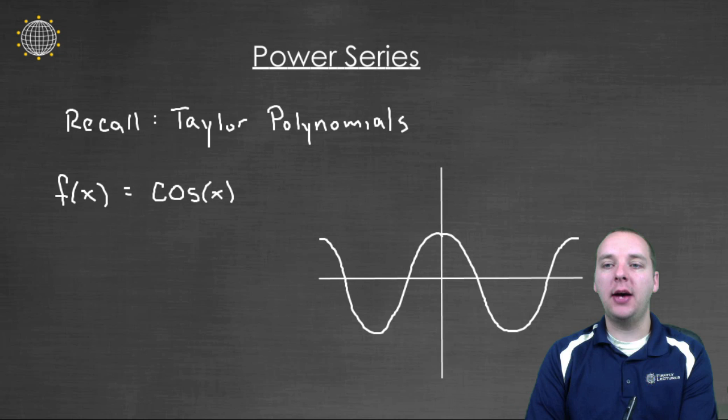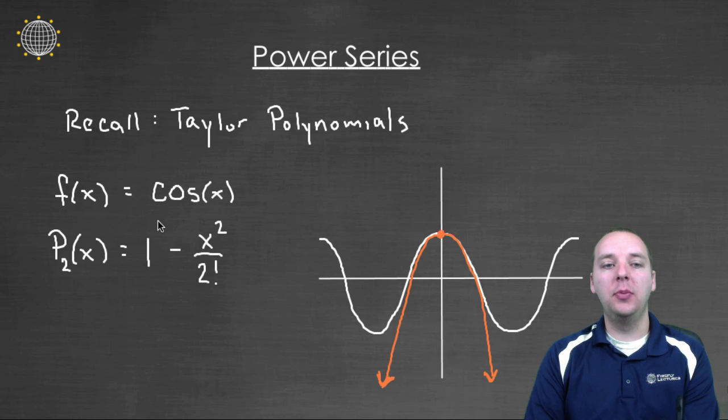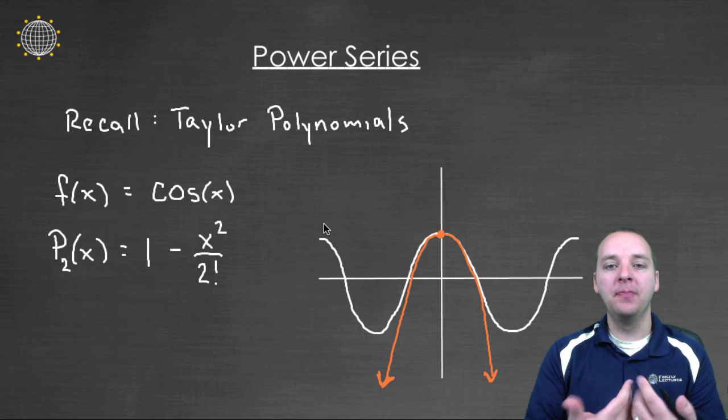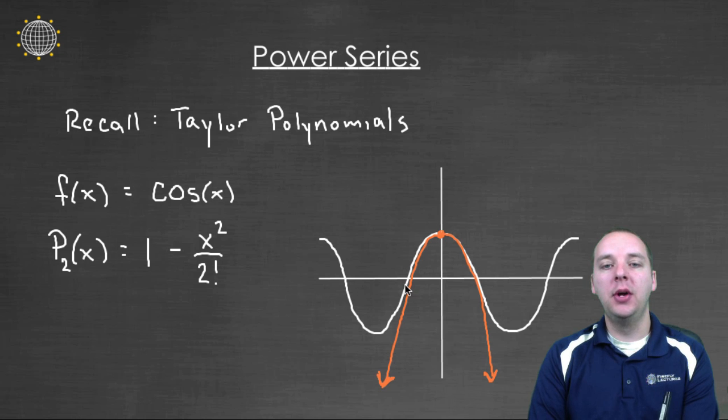So if you have a cosine graph, if you find a Taylor polynomial of degree 2, let's say a quadratic, it will approximate it well around wherever it's centered. The one I've done is centered at 0. And so you notice around 0, my quadratic approximates the cosine graph very well around 0.